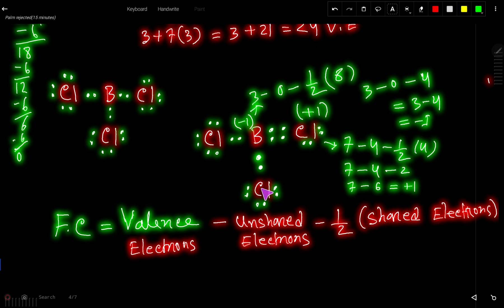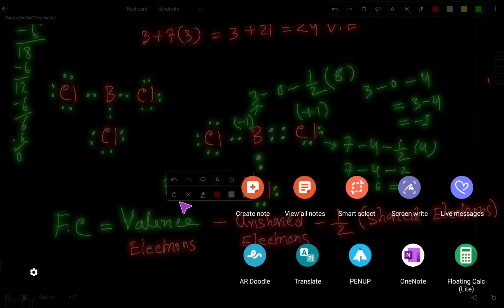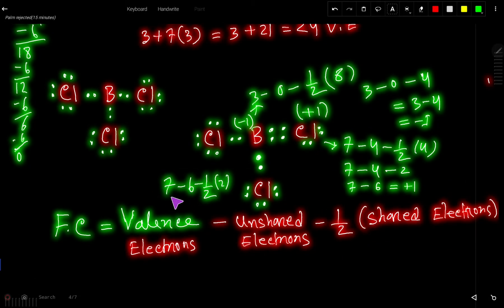Now let us apply the formula to the single-bonded chlorine atoms in the original structure. Valence electrons = 7, unshared electrons = 6, half of shared electrons = 1 (shared = 2). So formal charge = 7 − 6 − 1 = 0. The formal charge for these chlorine atoms is 0. Since the other single-bonded chlorine has the same electronic structure, its formal charge is also 0.